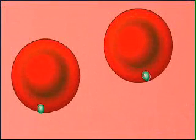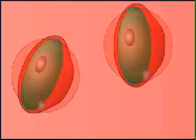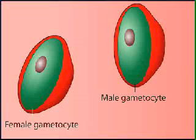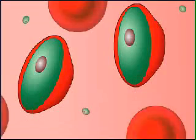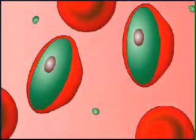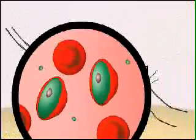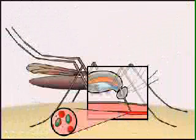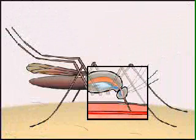Some of the infecting merozoites develop into sexual forms called gametocytes, which are either male or female. In the life cycle of Plasmodium falciparum, gametocytes become large oval structures within red blood cells.